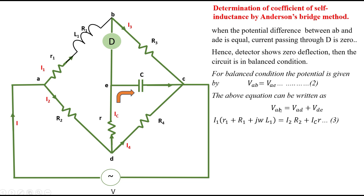Now we take the potential AB — that is across this end and this end. The potential is current into resistance. The current through this path is I1, resistance is R1 plus the resistance of the inductance coil as well as the inductive reactance JωL1, which equals VAB. VAD equals I2 into resistance R2, plus VDE. VDE, the potential across DE, is current IC into small resistance r.